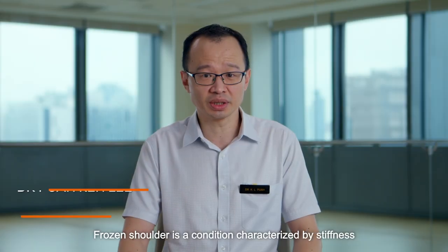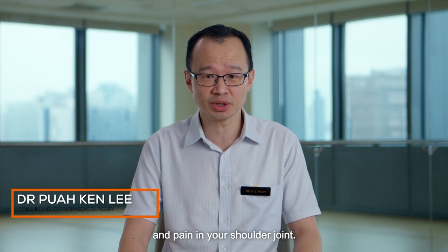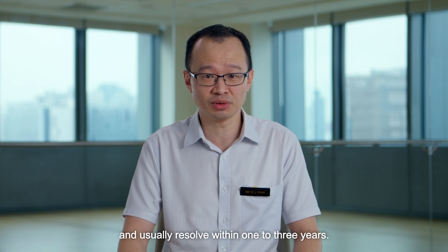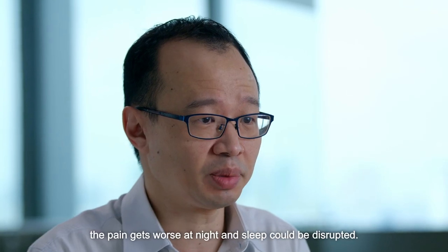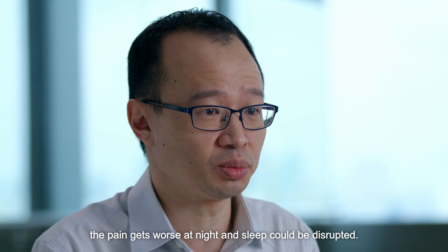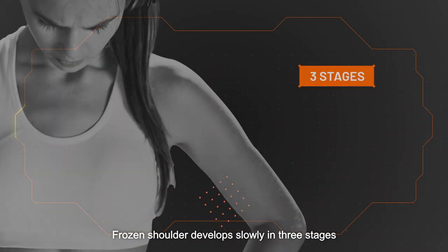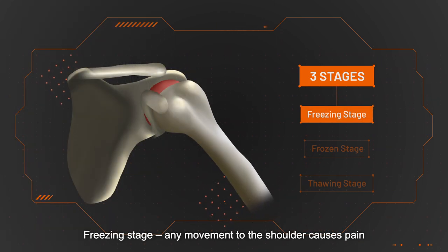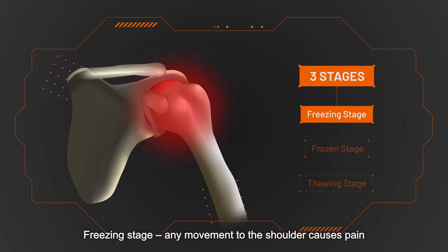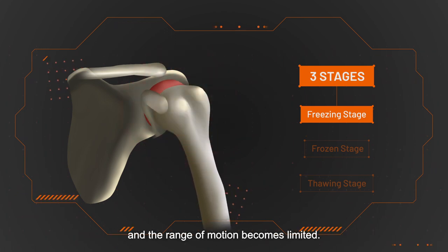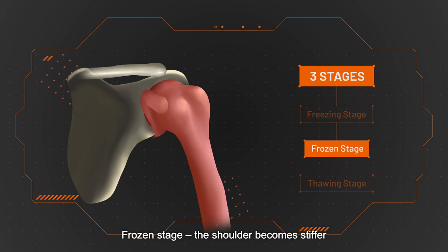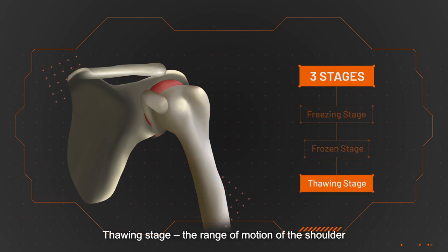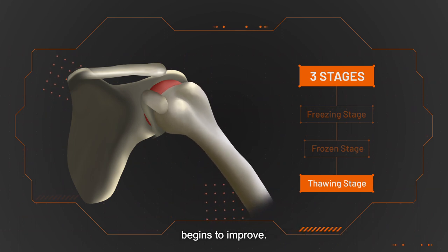Frozen shoulder is a condition characterised by stiffness and pain in your shoulder joint. Typically, the symptoms worsen over time and usually resolve within one to three years. For some people, the pain gets worse at night and sleep could be disrupted. Frozen shoulder develops slowly in three stages, each lasting a few months: the freezing stage, where any movement causes pain and range of motion becomes limited; the frozen stage, where the shoulder becomes stiffer; and the thawing stage, where range of motion begins to improve.